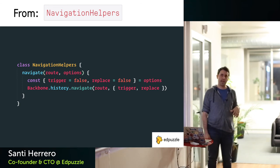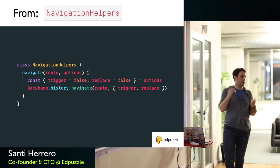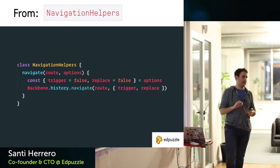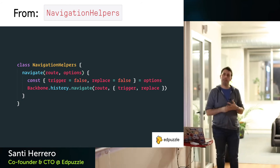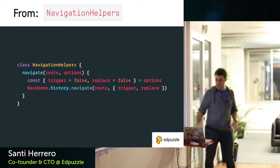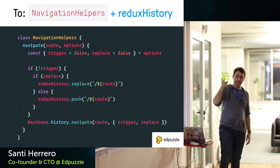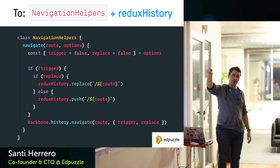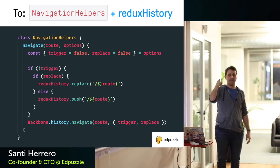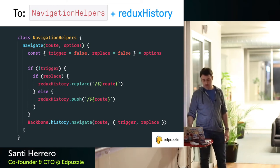Fortunately, we already had a class called `NavigationHelpers` with a navigate method accepting a route and options — whether it triggers a routing change or replaces the previous route silently. We had everything centralized in one place. So what we did was: whenever someone navigates without triggering, if it's a replace we replace in the memory history; if not we just push. That covers the third case.